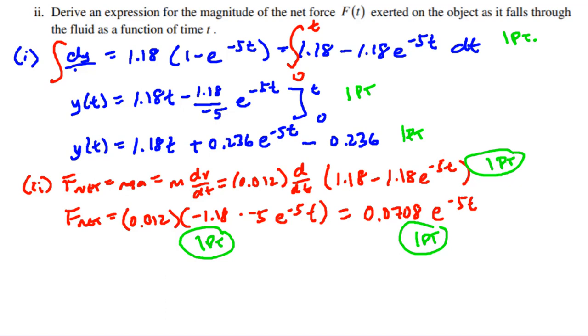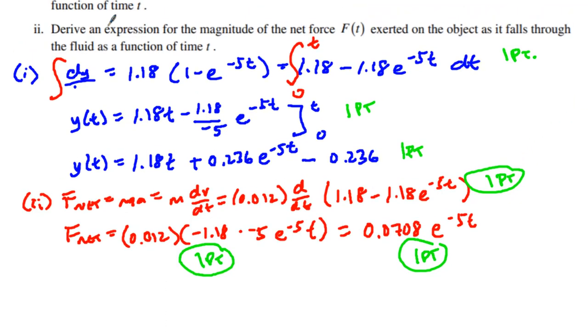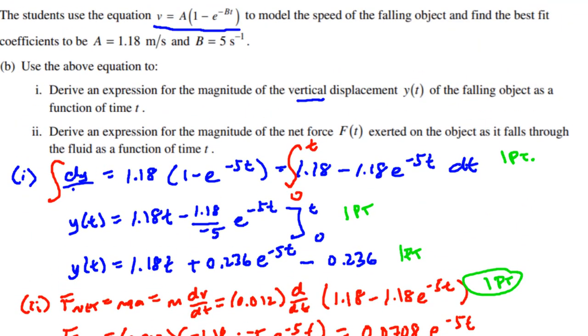B1 is worth three points. B2 is worth three points.